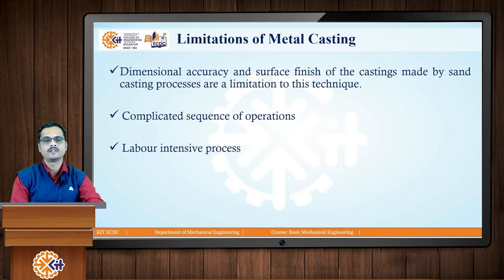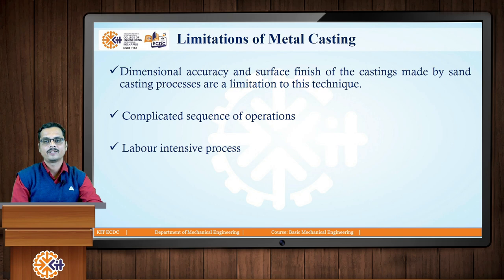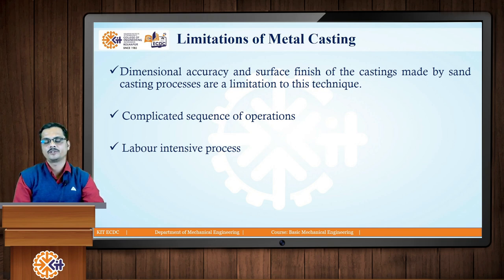Along with these advantages there are certain limitations associated with metal casting. The first limitation is that the dimensional accuracy and surface finish of castings produced by sand casting are inferior compared to other manufacturing processes. These limitations can be overcome by shifting towards die casting. The second limitation is that casting involves a complicated sequence of operations — in each of the six steps there are numerous parameters to control, making it very complex. It is also a labor-intensive process, requiring huge manpower, especially when using sand casting.